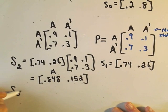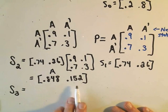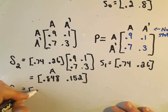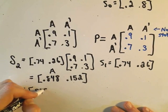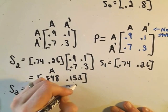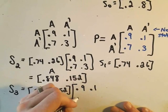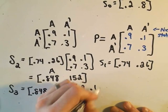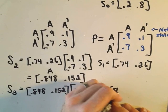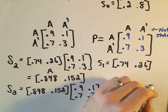Maybe we do one more. We want to figure out the market share after three weeks of running this ad campaign. We would take the proportion that was using brand A after two weeks, and again, assuming this probability matrix does not change, we'll just multiply it by that again, and the values I got in this case are 0.8696 and 0.1304.